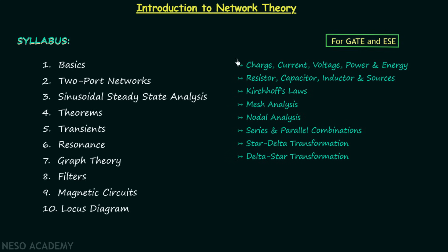Then we will move on to series and parallel combinations of resistors, series and parallel combinations of capacitors, series and parallel combinations of inductors, and finally we will have discussion on star-delta transformation and delta-star transformation. Remember, these are the important topics, though there are many smaller topics in the chapter as well. So this is all for the first chapter.